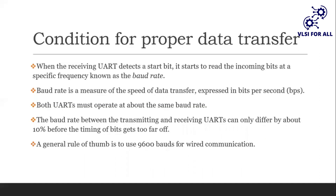Now, there is a condition for proper data transfer. When the receiving UART detects a start bit, it starts reading the incoming bits at a specific frequency known as the baud rate. Baud rate is defined as the speed of data transfer between UARTs, and it is expressed in bits per second. Both UARTs must operate at the same baud rate, but they can differ only by 10% before timing errors occur. A general rule of thumb is to use 9600 baud for wired communication. There are also several other baud rates defined for UART communication.